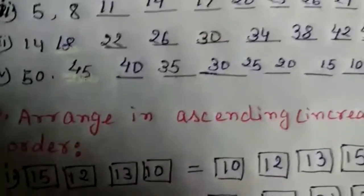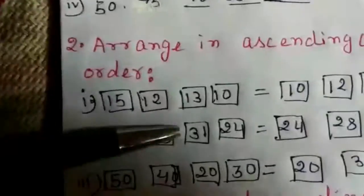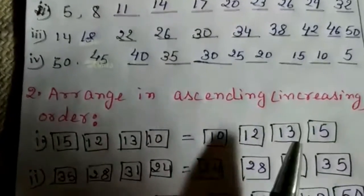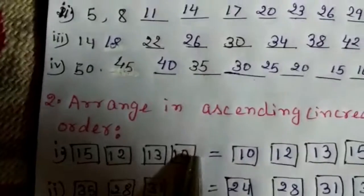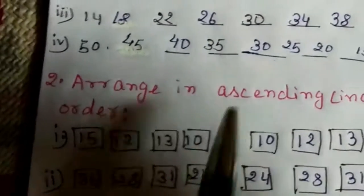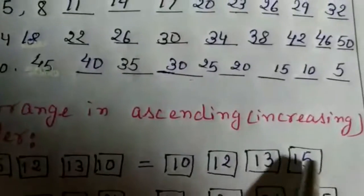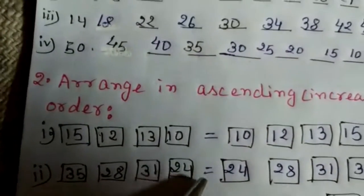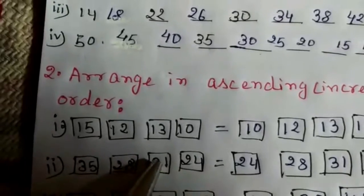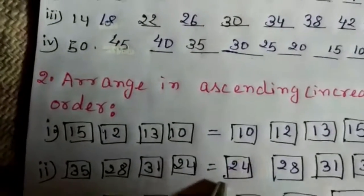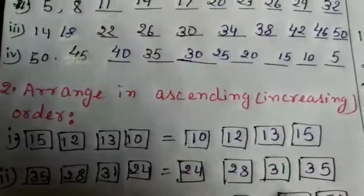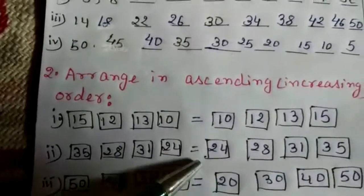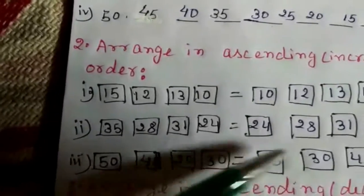Now question number 2: arrange in ascending order. Ascending order means increasing order — from smaller number to bigger number. First set: 15, 12, 13, 10. The smallest is 10, so we write 10, then 12, then 13, then 15. Next set: 35, 28, 31, 24. Smallest is 24, then 28, then 31, then 35. Last set: 50, 40, 20, 30. We write 20, then 30, then 40, then 50.